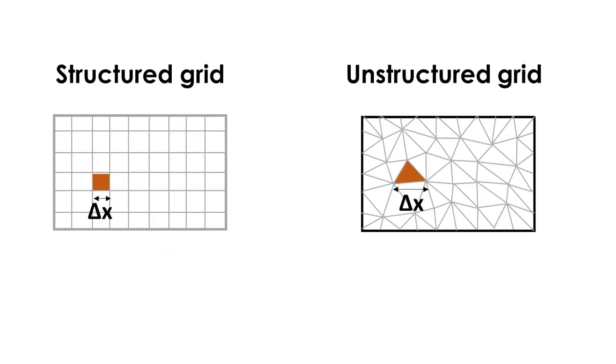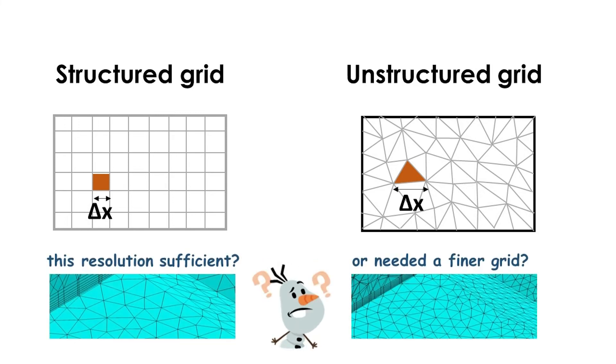Since the cell size represents Δx, technically, the smaller the cell size, the better the numerical approximation by CFD. If the cell size is too large, it may lead to an inaccurate CFD solution. Therefore, CFD users need to examine if their solution is independent of grid size.